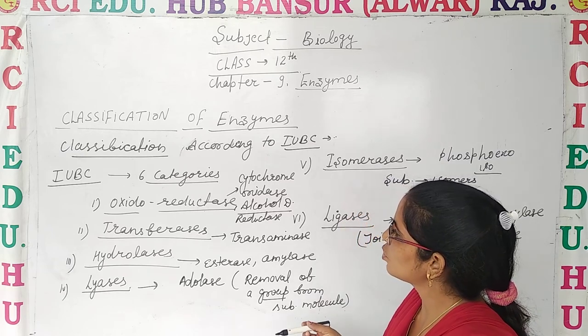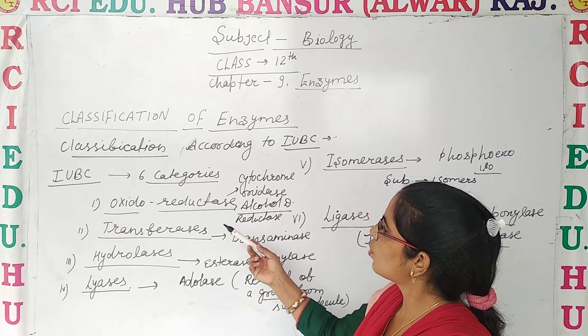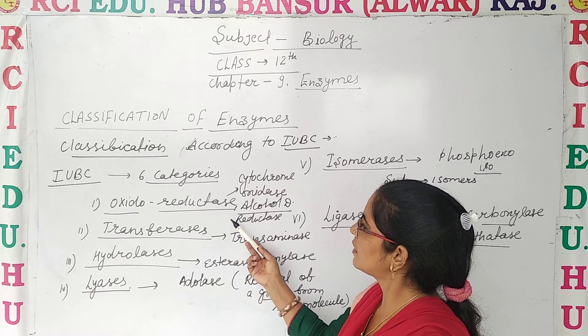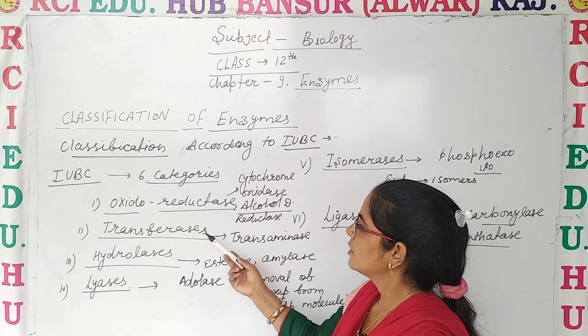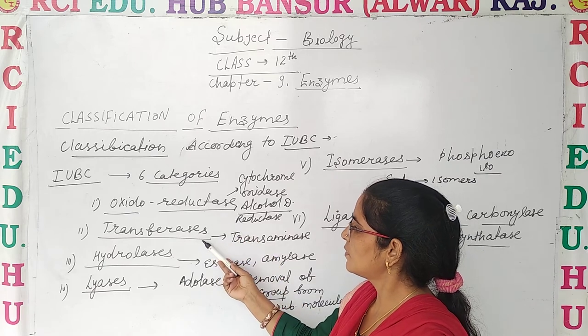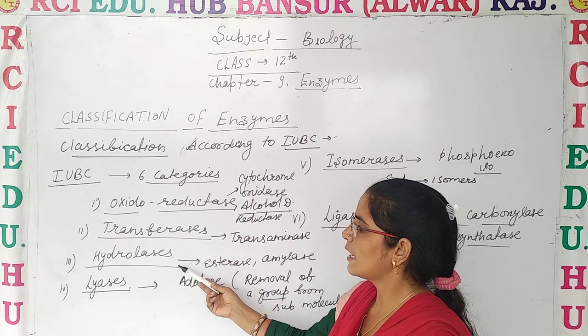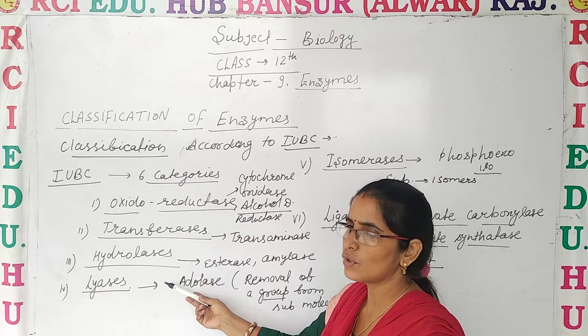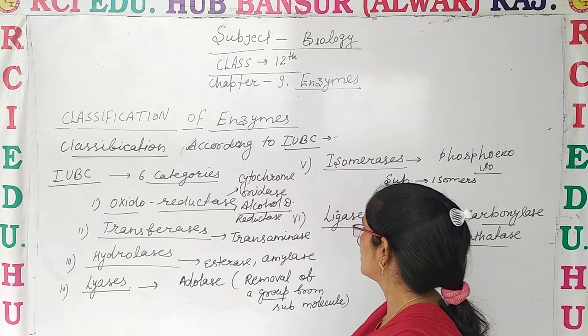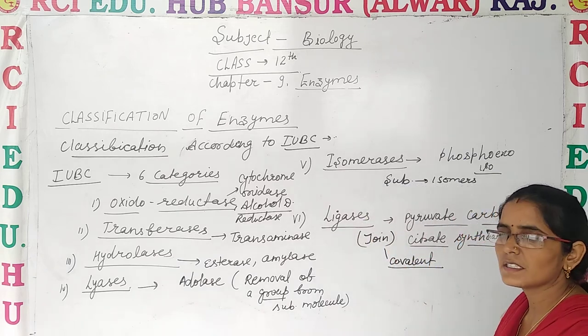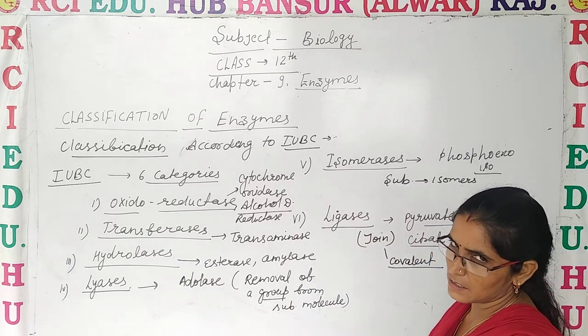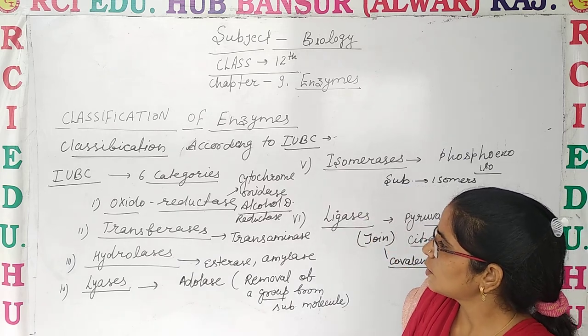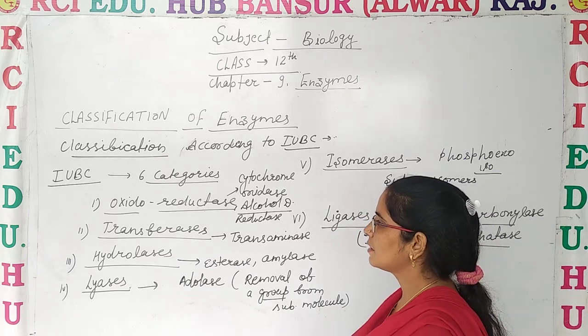The first category is Oxidoreductase enzymes. The second is Transferases. The third is Hydrolases. The fourth is Lyases. The fifth is Isomerases. And the sixth is Ligases enzymes. Let's discuss what type of reactions each of them catalyzes.